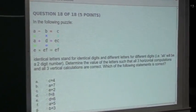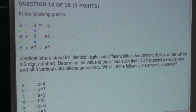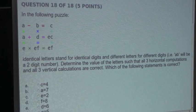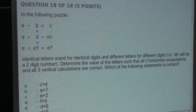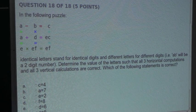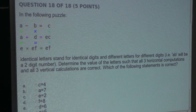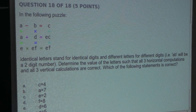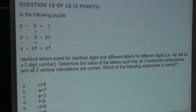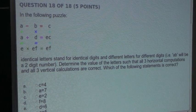So the question is, in the following puzzle, identical letters stand for identical digits and different letters for different digits. For example, AB will be a two-digit number. Determine the value of the letters such that all three horizontal computations and all three vertical calculations are correct. Which of the following statements is correct?